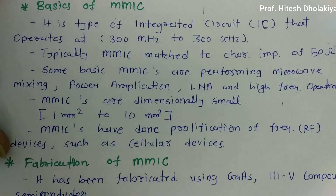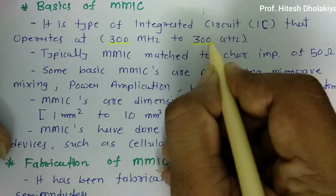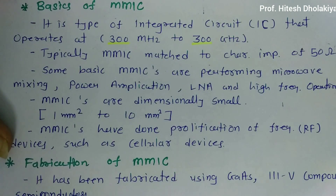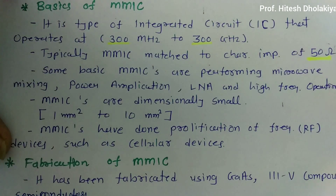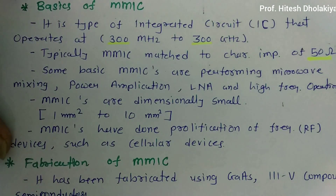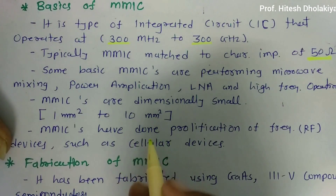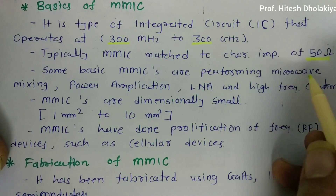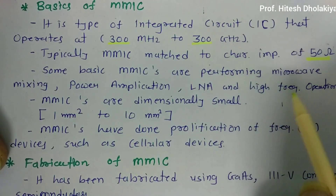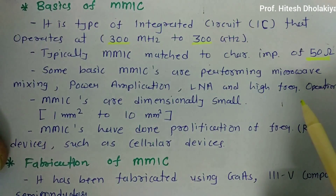Basically, MMIC is an integrated circuit operating at 300 MHz to 300 GHz. Typically it is fabricated with a characteristic impedance of 50 ohms, since almost all microwave circuits use 50 ohms. Basic MMICs perform operations such as microwave mixing, power amplification, low noise amplification, and other high frequency operations. This IC is all about high frequency performance.